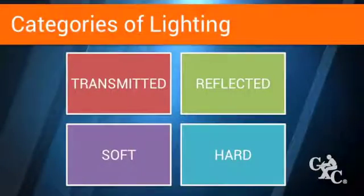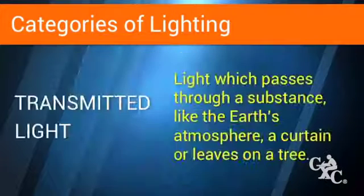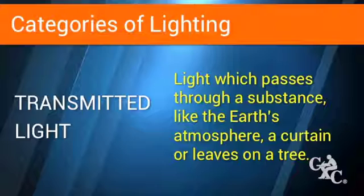Light is broken down into four different categories: transmitted, reflected, soft, and hard. Transmitted light is light which passes through a substance, like the Earth's atmosphere, a curtain, or leaves on a tree.